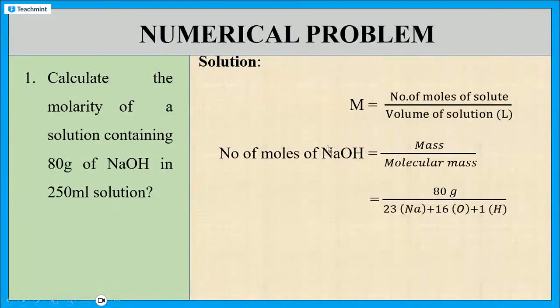First, write down the atomic mass of sodium, that is 23, plus atomic mass of oxygen, that is 16, and the atomic mass of hydrogen, that is 1. That is 23 plus 16 plus 1, that is 40 gram per mole. It is the unit of molecular mass. So, 80 divided by 40 is nothing but 2. Gram gram gets cancelled and it is 2 mole.